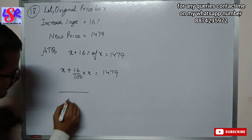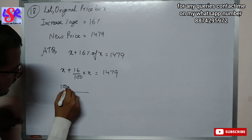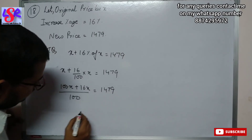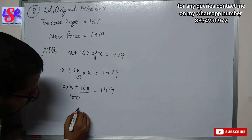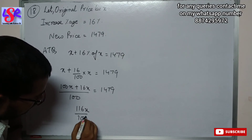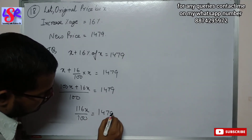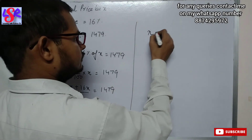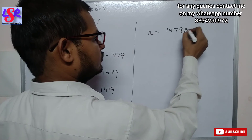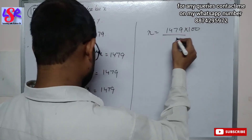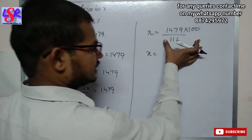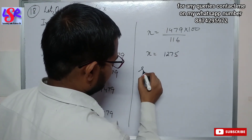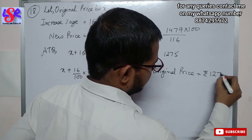Taking LCM as 100, we get 100x plus 16x equals 1479. The sum gives 116x upon 100 equals 1479. Solving for x: x equals 1479 into 100 upon 116. On solving this we get 1275. So original price equals rupees 1275.